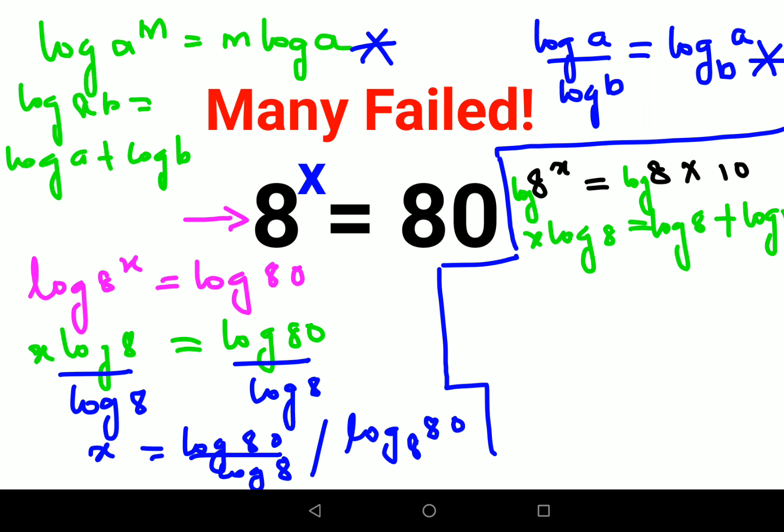Now please understand, whenever there is no base given, it is assumed, it is always assumed that all of these bases are nothing but 10. So now at this point, you need to remember that log of any number to the base of same number will always be 1.